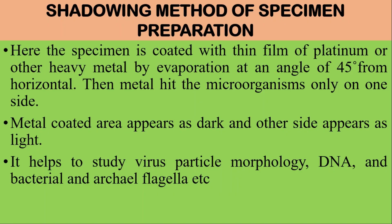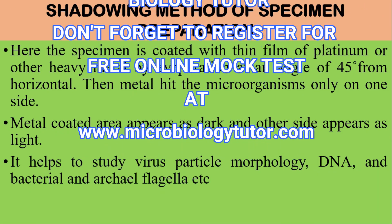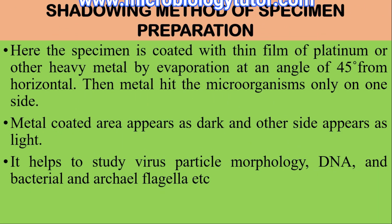Shadowing method of specimen preparation. Here, a specimen is coated with a thin film of platinum or other heavy metal by evaporation at an angle of 45 degrees from horizontal. The metal hits the microorganism only on one side — the metal-coated area appears dark, and the other side appears light. This method helps to study virus particle morphology, DNA, bacteria, and archaeal flagella.